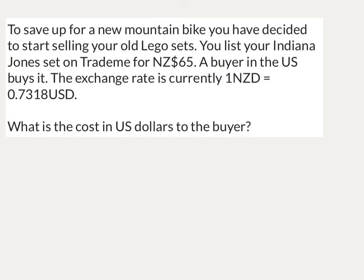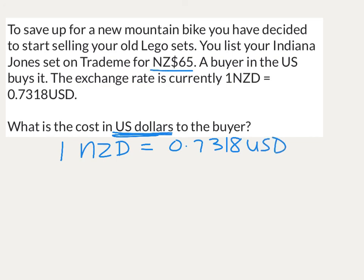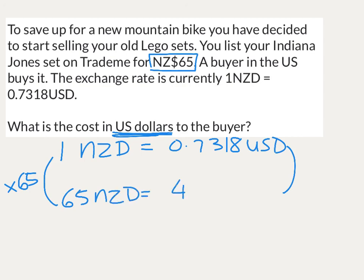The next one is a bit easier. This time you're selling your old Lego set to save up for a mountain bike. You put your Indiana Jones set on Trade Me and someone buys it for 65 NZD. We want to work out what the cost in US dollars will be to the buyer in the US. We've got 1 NZD equals 0.7318 US dollars. We need the value of 65 NZD, and we already know the value of 1, so we just multiply both sides by 65. That gives us 47 US dollars and 57 cents. When working with exchange rates, always check the direction you need to go — sometimes it's straightforward like this.